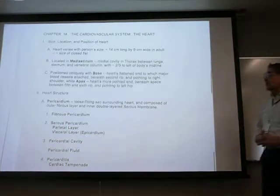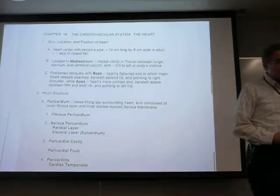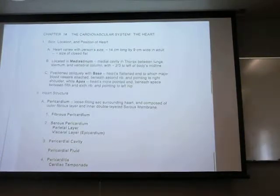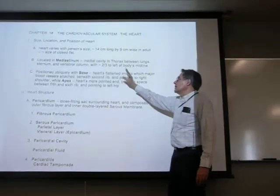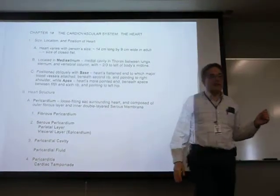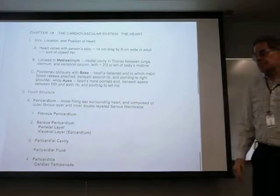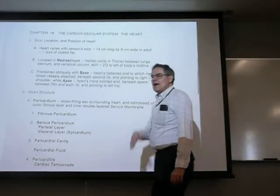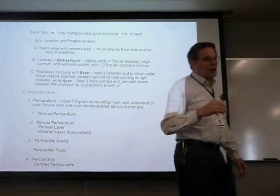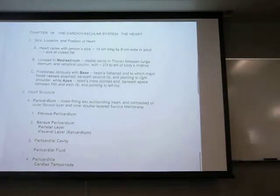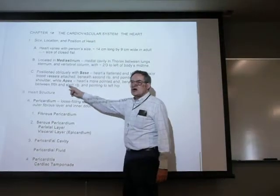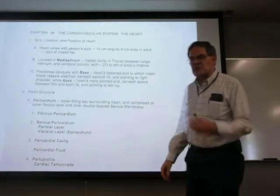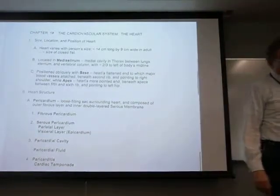Our heart is located in the thoracic cavity in that medial portion called the mediastinum, and it's surrounded on either side by the pleural cavities which house the lungs. Most of the heart actually lies more to the left of midline — about two-thirds of it — and it's positioned at an angle. The base of the heart is the superior part to which the major blood vessels attach. The more tapered, pointed, inferior part is called the apex. The mediastinum is that medial cavity in the thoracic or chest cavity.